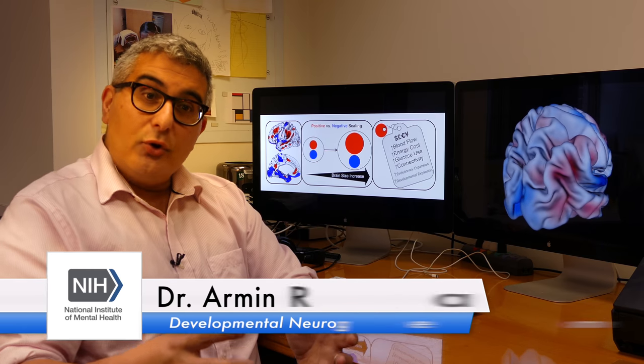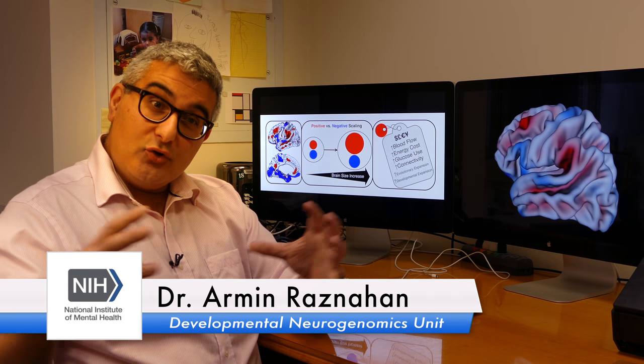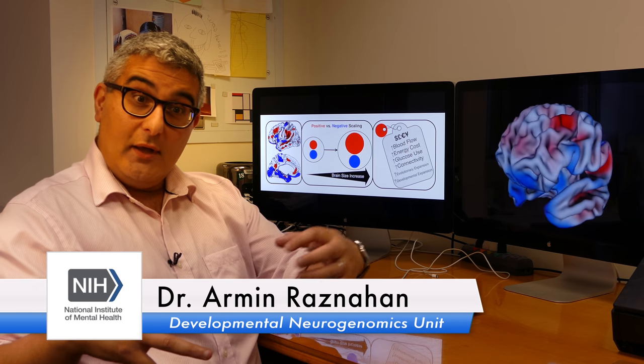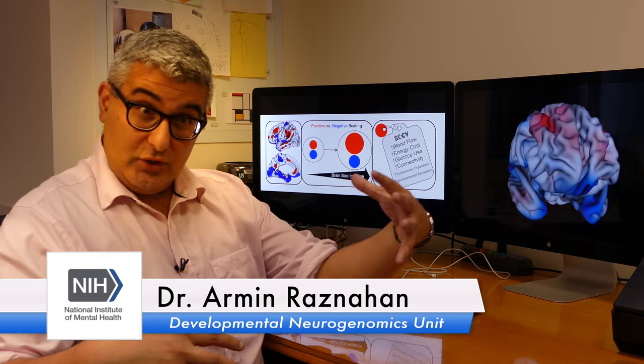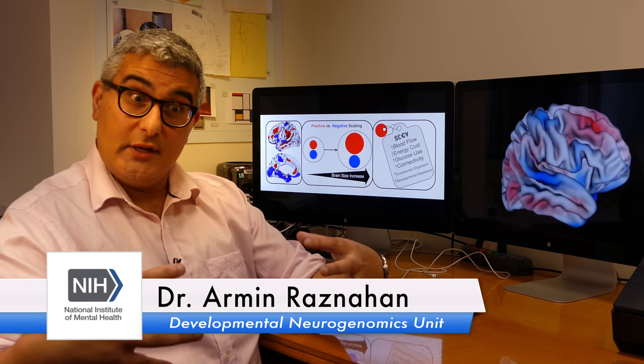Does the brain scale up like Photoshop, just like a linear expansion, or is it the case that in larger brains some regions become notably large and others fail to get as big as they should essentially?